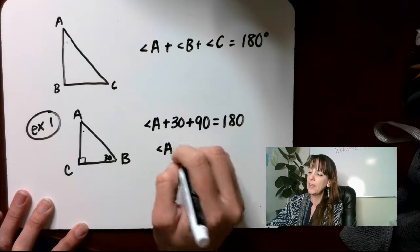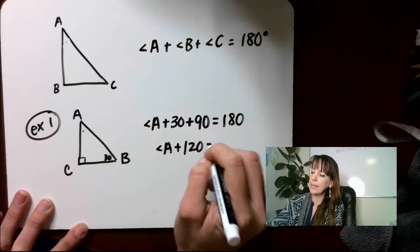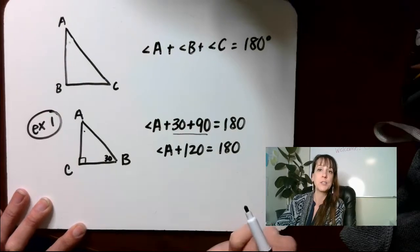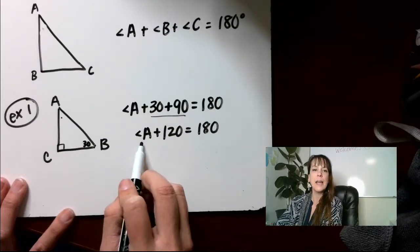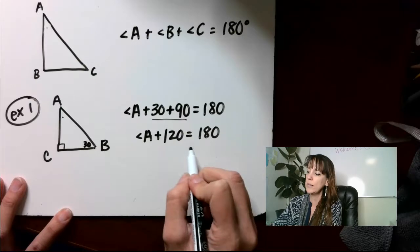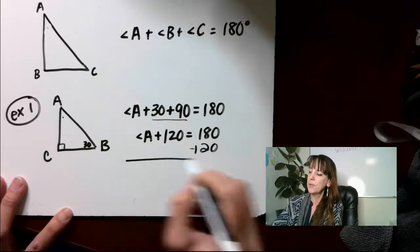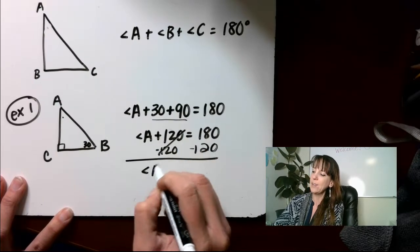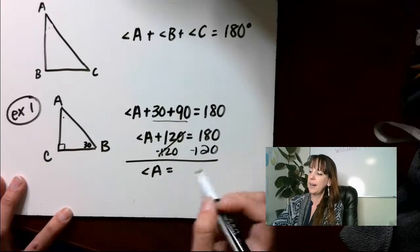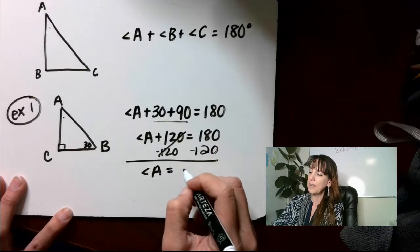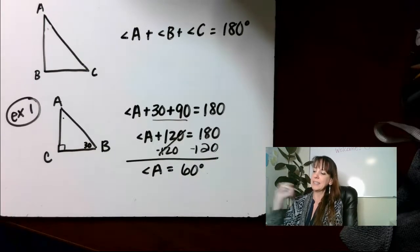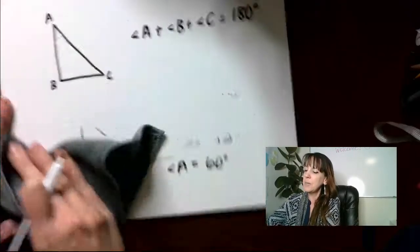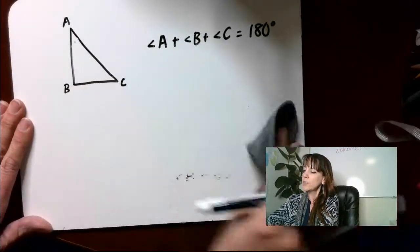Angle A plus 120 equals 180, because all I did was combine those two. In order to find angle A, we just subtract 120 from 180. When we do that, we get angle A equals 60 degrees. So all of our angles add up to 180 degrees. Make sure you're writing that down and taking notes.